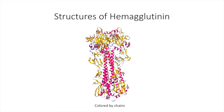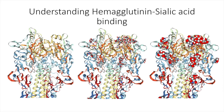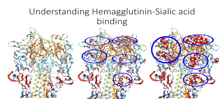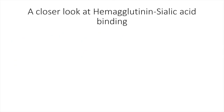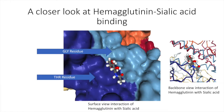The structure of hemagglutinin is very important for the replication of influenza within mammals. The protein contains three spherical heads that hold multiple sialic acid binding sites. The protein is also homotrimeric, meaning that it contains three identical monomers. These monomers form a central alpha helix coil. Hemagglutinin has high specificity of binding to units of sialic acid, which allows the virus to recognize its target cells. Hydrogen bonding occurs between the glycine and threonine residues of the globular head. Once many sialic acid compounds have bound to these residues, the virus is engulfed and enclosed within the endosome.